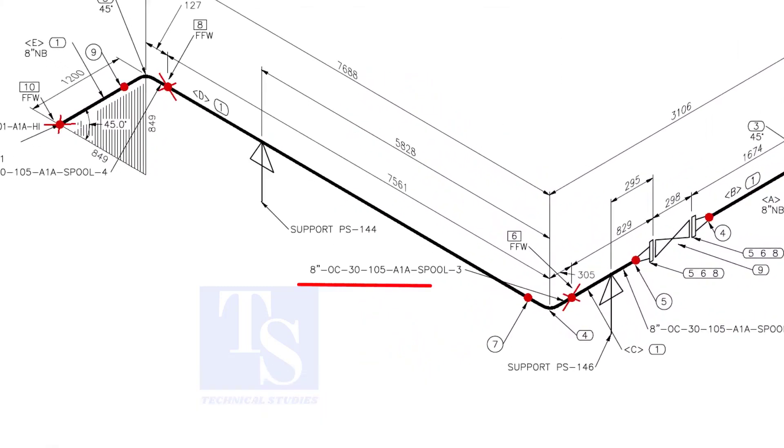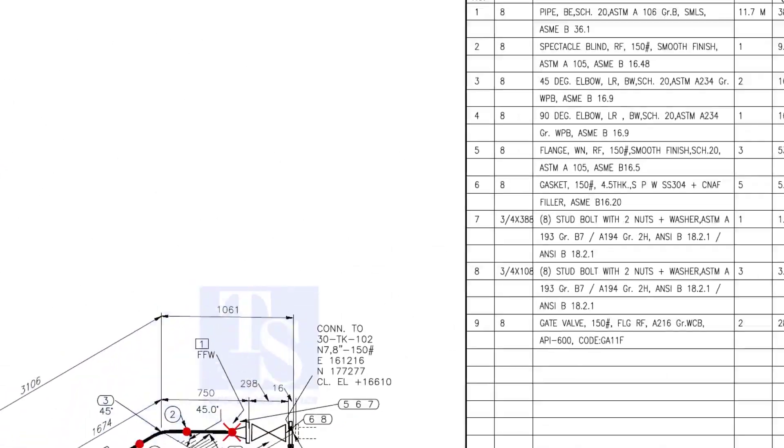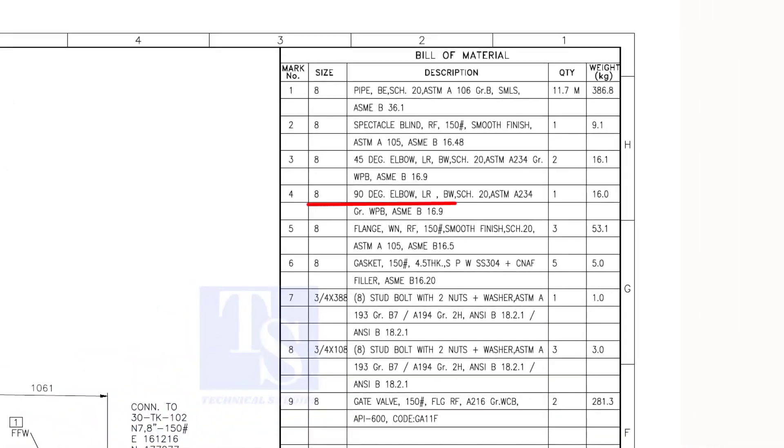Check the details of spool number three. We know item number one is pipe. Check what is item number four in the material list. As per the list, item number four is a 90-degree long radius elbow. Let us fabricate this spool.